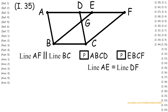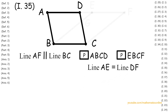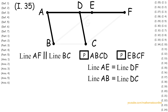Again, by Proposition 34, parallelogram ABCD has line AB congruent to line DC. Now notice that the parallel lines AB and DC are intersected by line AF. Therefore, by Proposition 29, the exterior angle FDC is congruent to the opposite interior angle EAB.